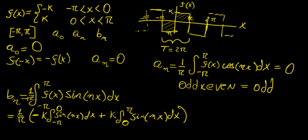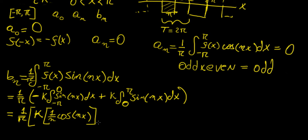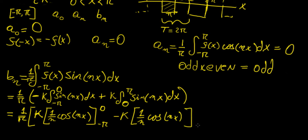Now we integrate each of these individually. Integrating sine gives minus cosine, so we get (1/π) times: k times (1/n) cosine(nx) evaluated from minus pi to zero, minus k times (1/n) cosine(nx) evaluated from zero to pi.